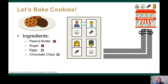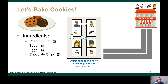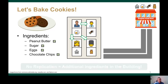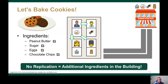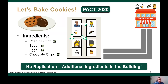But what if we agreed that each one of us is always responsible for keeping one unique ingredient? This way, I can get the missing ingredients from my neighbor and save the trip to the supermarket. So you can see that by eliminating the ingredient replication, we can have more unique ingredients in the building, and this is the main idea of our TACO 2020 paper.